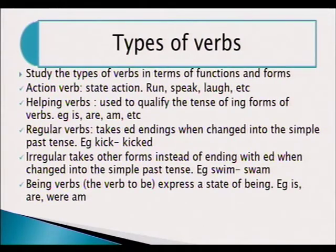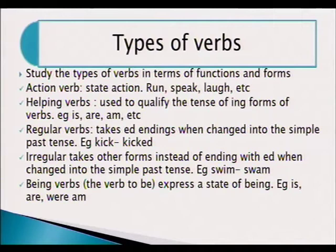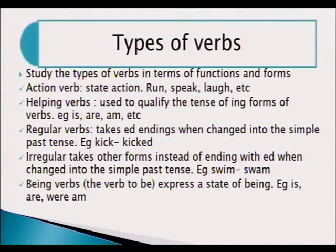Then we have the being verbs — the verb 'to be'. These do not express action. They are the main verb in the sentence but don't express action. For example, if we say 'I am sick', the verb is 'am', and 'am' is used to express the state of being sick. The other forms of the verb 'to be' are: is, are, were, am.